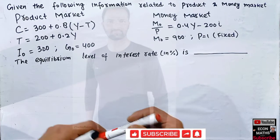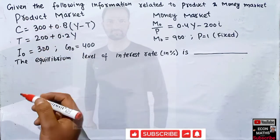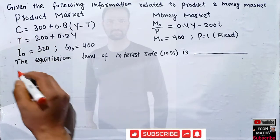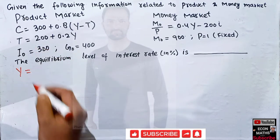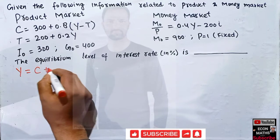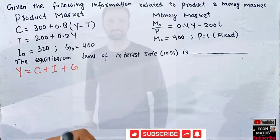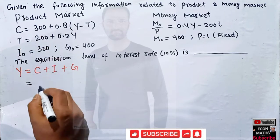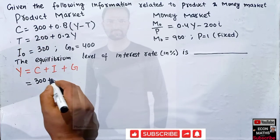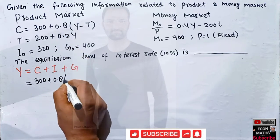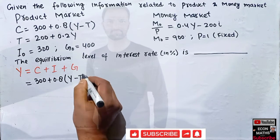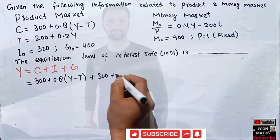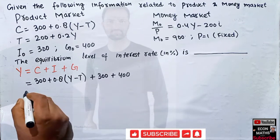We are asked to find the equilibrium level of interest rate. Let's solve the product market first. Using the national income identity Y = C + I + G, we substitute: C = 300 + 0.8(Y - T), investment I = 300, and government expenditure G = 400.